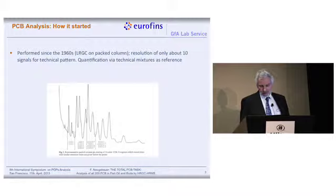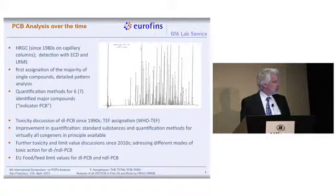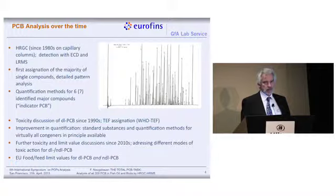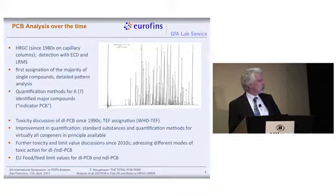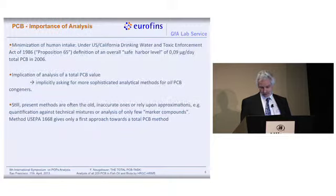Then, in the 1990s, toxicity discussion came in, discovering that some of the PCBs would actually have dioxin-like activities, assigning TEF — toxic equivalent factors — to those compounds. Along with that came additional market activity by producers of standards providing all the necessary standard solutions. But still nobody switched over to analyzing really all of the compounds. Instead, more activity was put into discussing limit values. At the moment we have a new EU evaluation of limit values for food and feed, but also focusing only upon the dioxin-like PCBs and the six main marker PCBs.